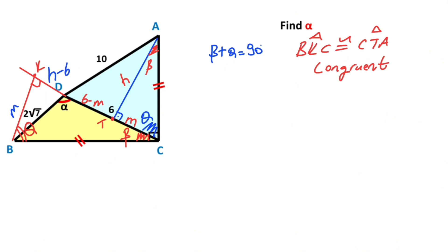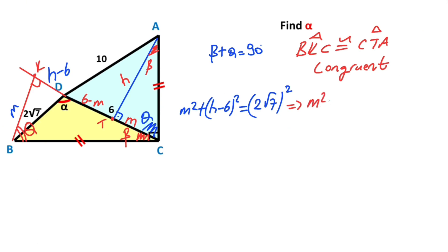After that, for this triangle, if we apply the Pythagorean theorem, we get m squared plus (h minus 6) squared equals (2 root 7) squared. Therefore, m squared plus h squared minus 12h plus 36 equals 28.